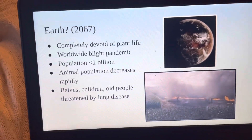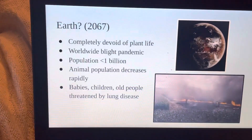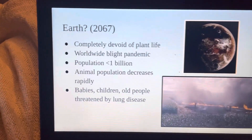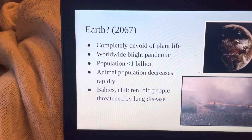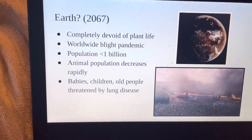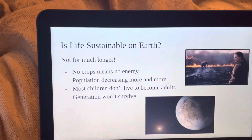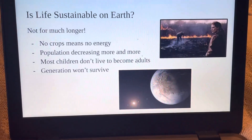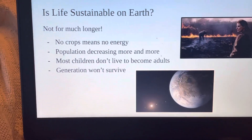The final planet is Earth — Earth in 2067, to be precise. Earth at this time is completely void of all plant life. All the plants were killed because of a worldwide blight pandemic. Animals followed shortly after due to having no energy source. This led to a worldwide dust bowl, and it endangered many young kids and old people with the risk of lung-related illnesses. All of these factors diminished the human population to far less than 1 billion. So, would life be sustainable on this Earth? No — not for long, at least. Since all of the energy sources are dying and there is no suitable farmland left, the current generation won't even survive. The only solution is to find a new home.